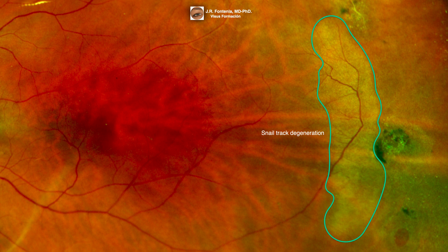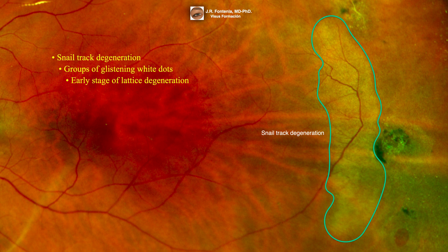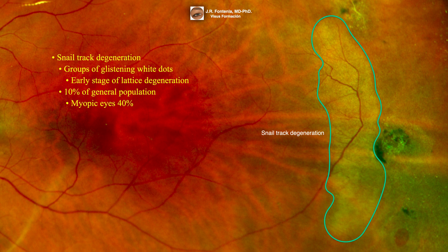Here we can see a snail track degeneration. It is defined as groups of glistening white dots, which have been compared to frost granules or salt. Snail track degeneration may be an early stage of lattice degeneration. Prevalence is found in 10% of the general population, more commonly in myopic eyes at 40%. It is a retinal thinning with vitreous liquefaction above the lesion, associated with vitreo-retinal traction.